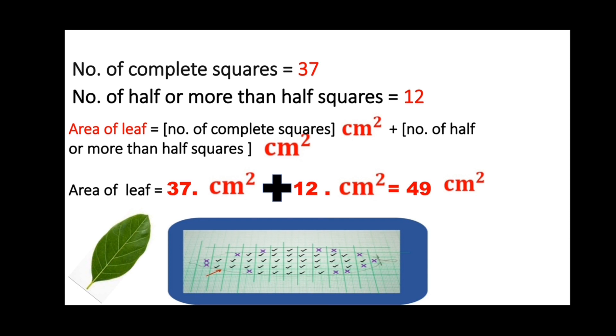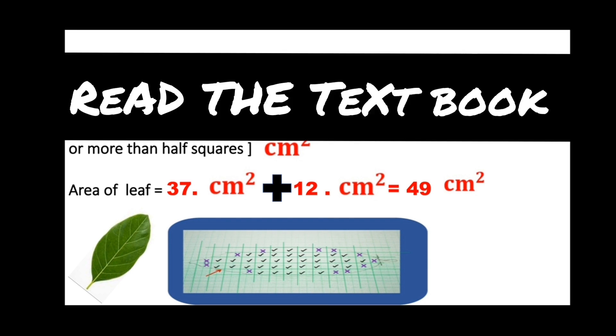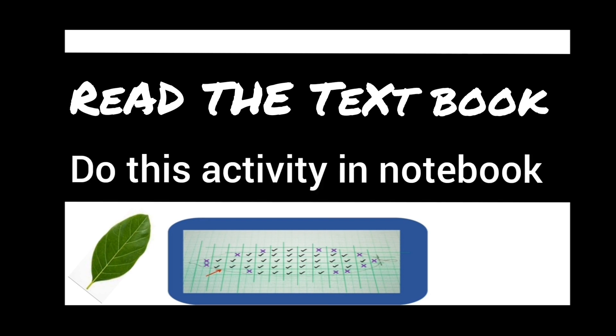This is Activity 1, which is discussed on page number 4 of the physics textbook, so you have to read the textbook and do this activity. If you don't have graph paper, no need to worry. Take a ruler, pencil, and plain paper, and draw horizontal and vertical lines with a spacing of 1 cm each, and then you can try.